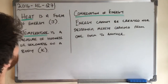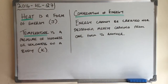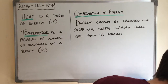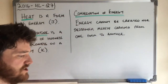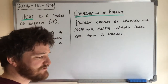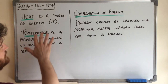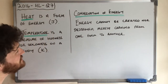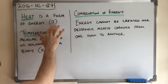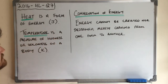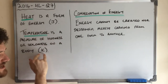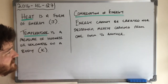We're looking at 2016 higher level question seven of physics leaving cert. The first thing they ask is to distinguish between heat and temperature. Heat is a form of energy measured in joules. Temperature is a measure of the hotness or coldness of a body as measured in Kelvin — be careful, it's Kelvin, not Celsius.